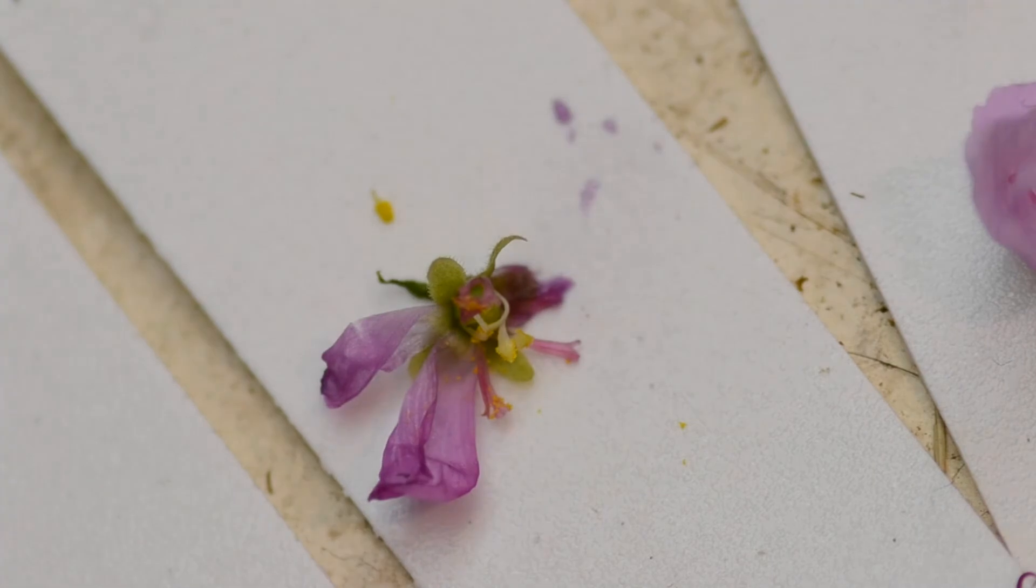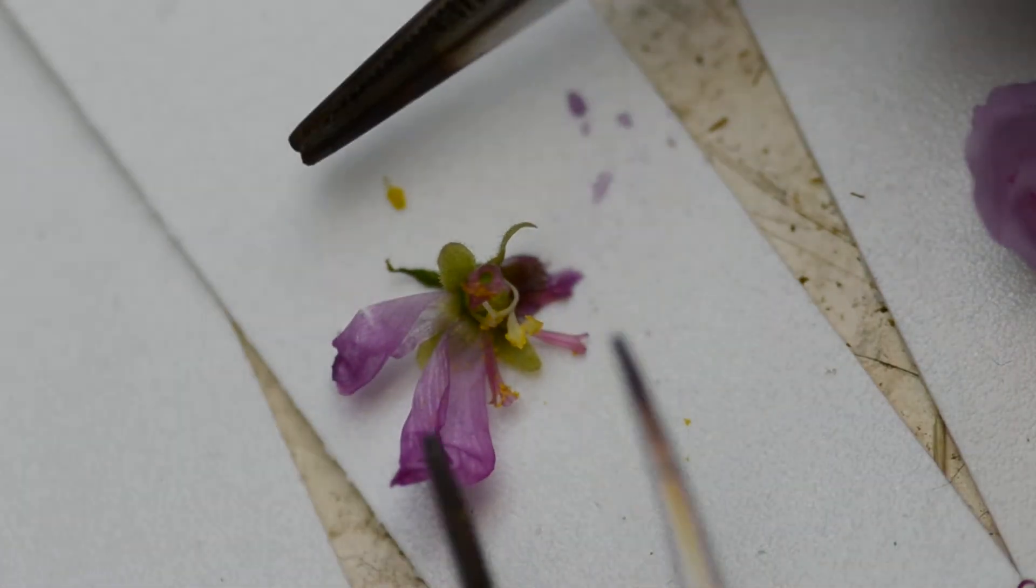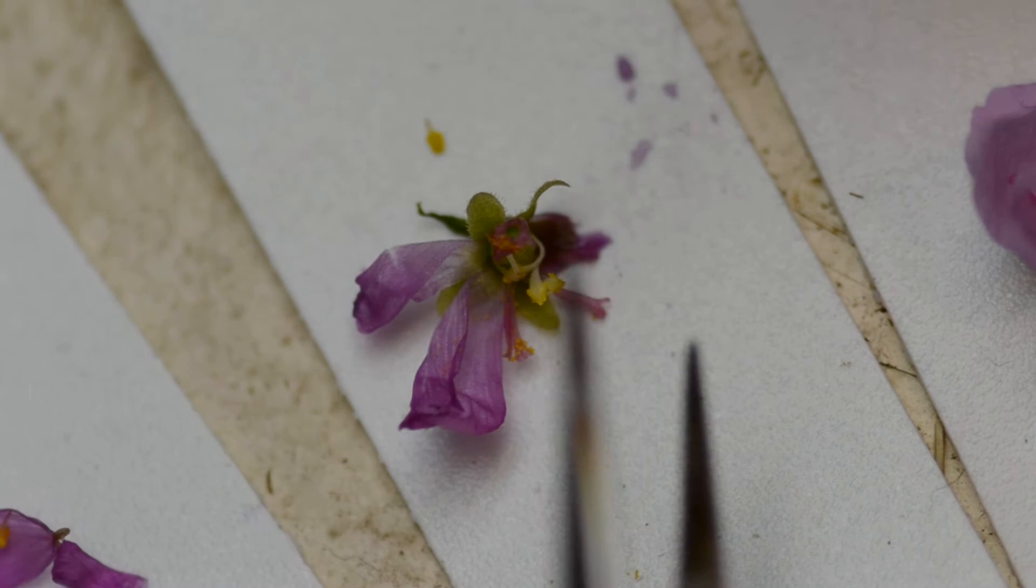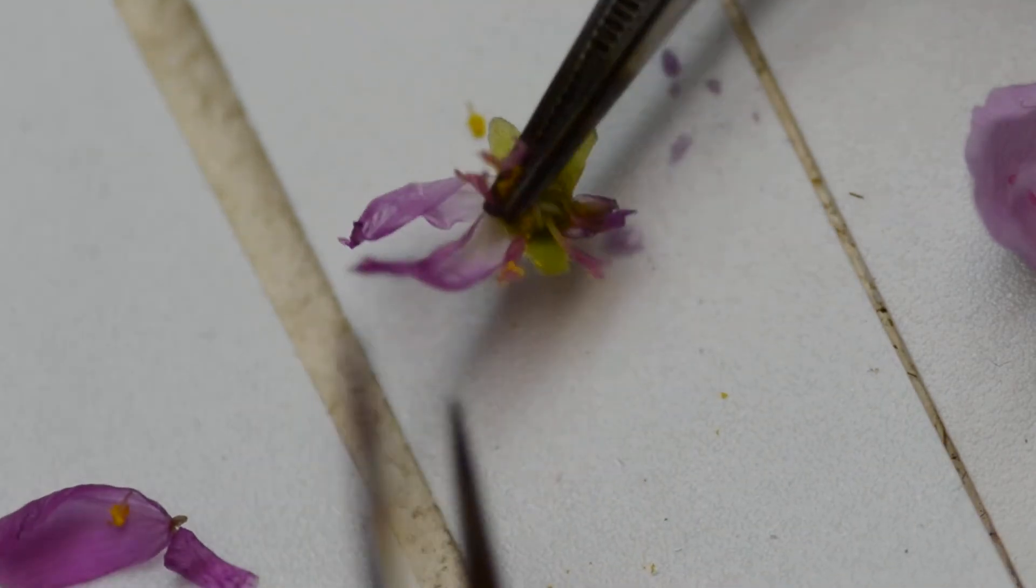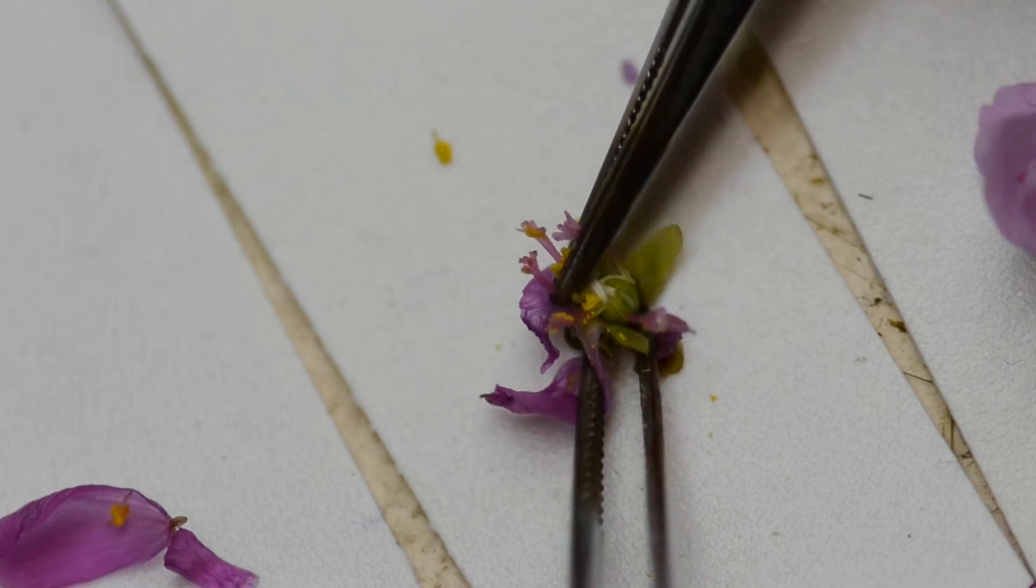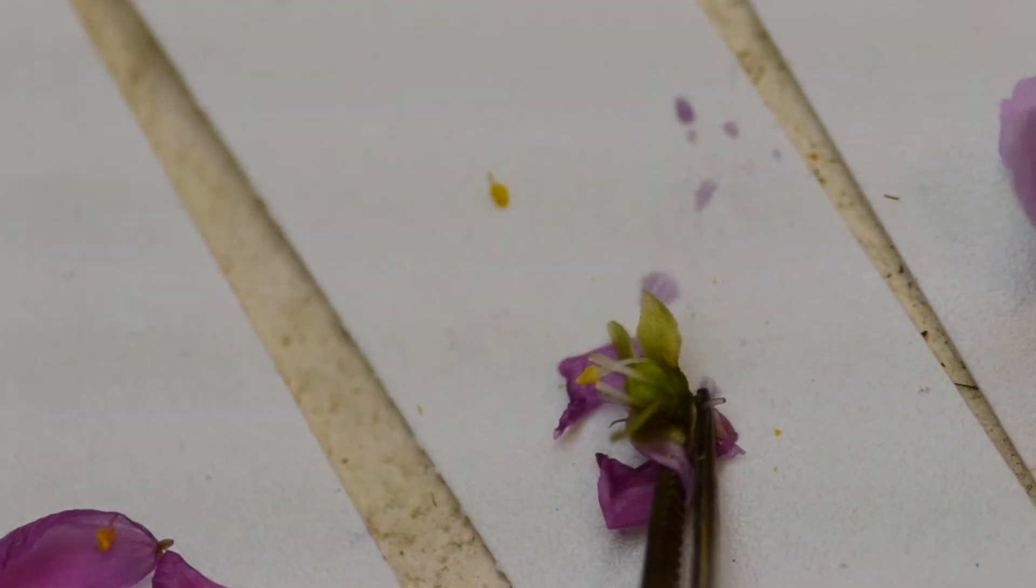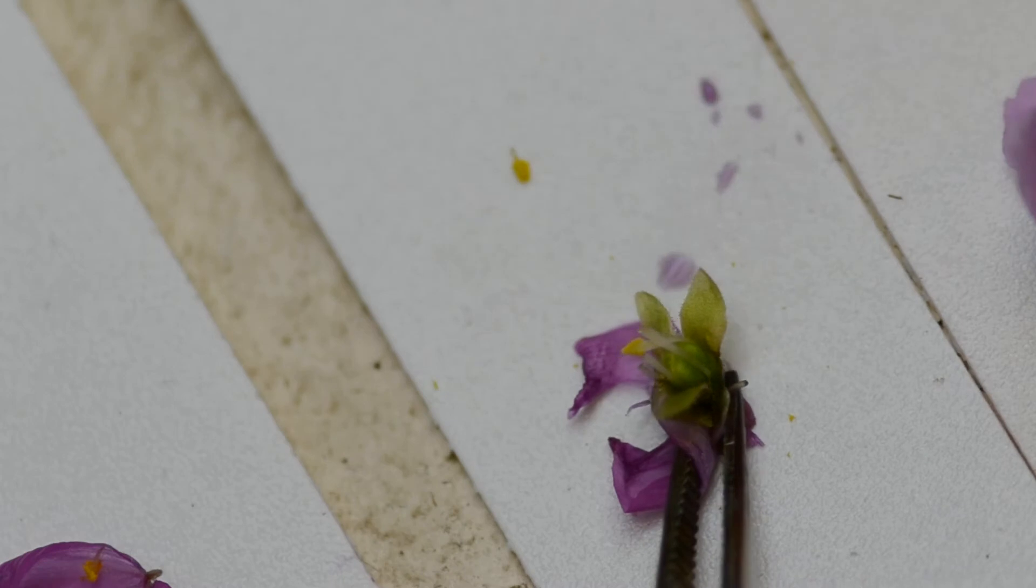Okay, so now if we turn the flower on its side, we expose a green lump. Let's see if you can see it. So the green lump is the ovary.